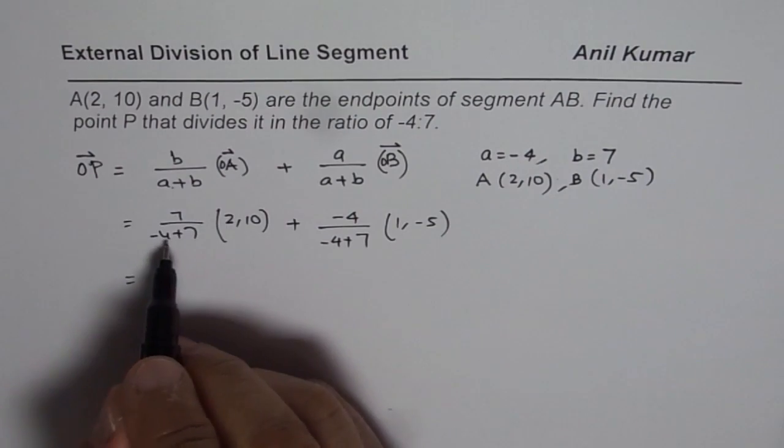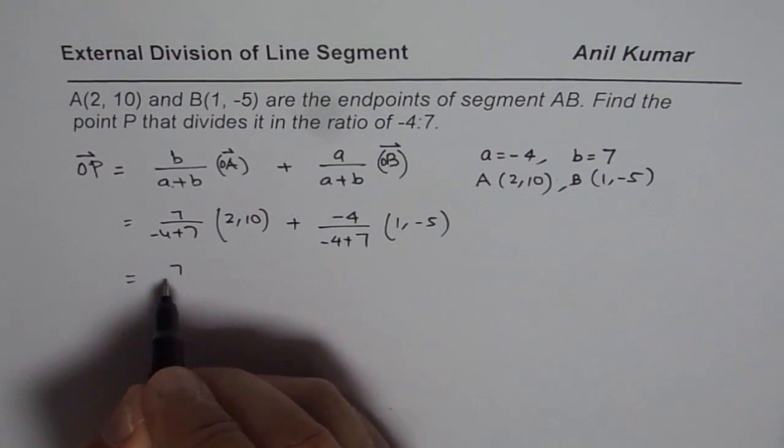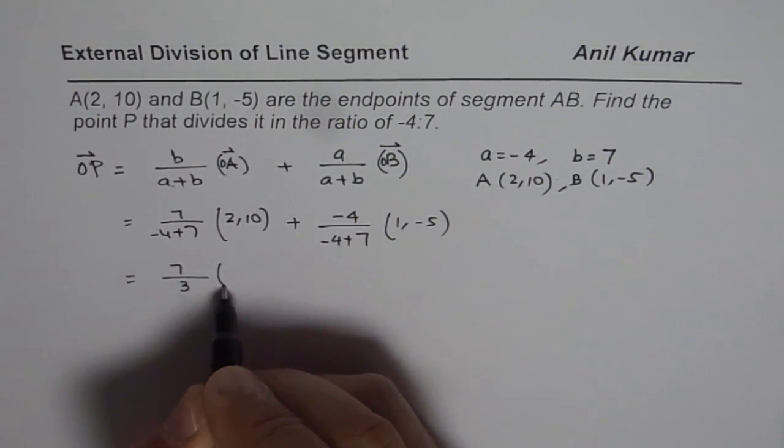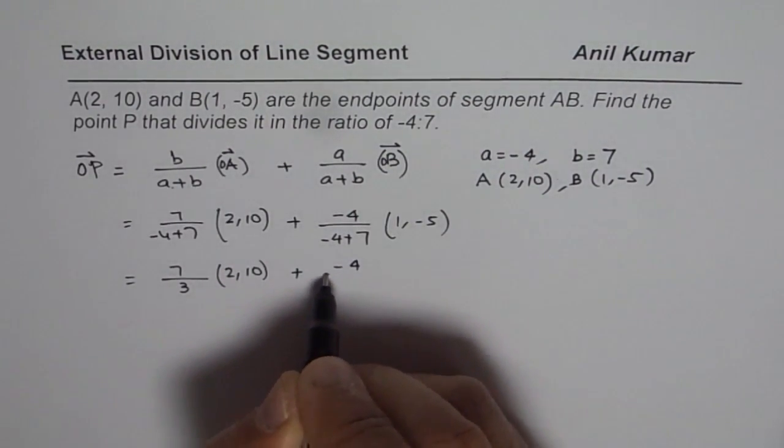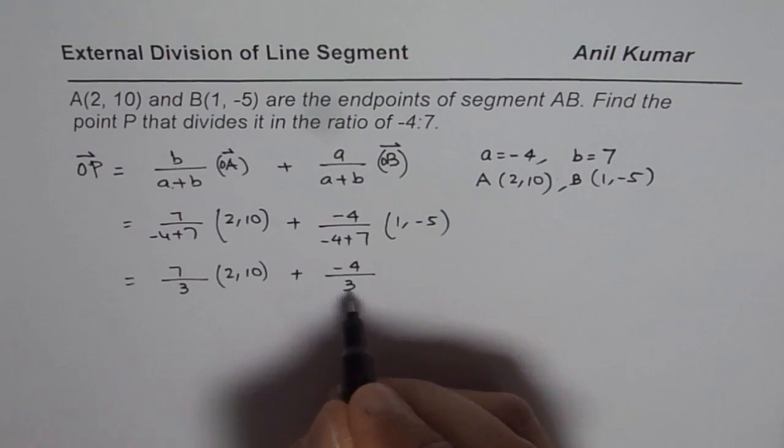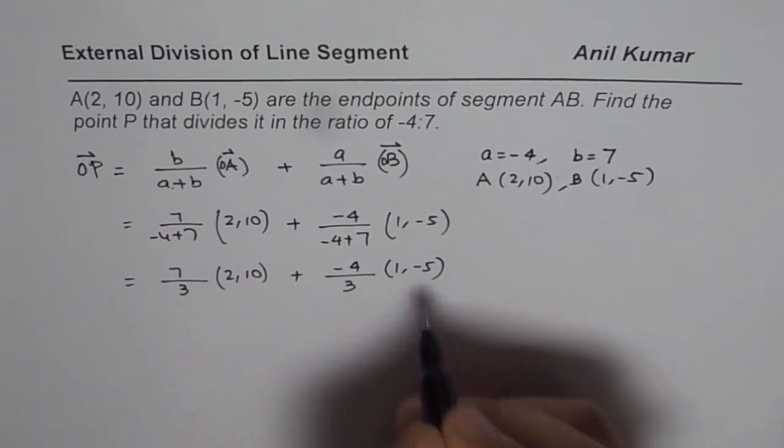So we will just multiply this. We have 7 over 3, times 2 comma 10, plus -4 over 3, times 1 comma -5.